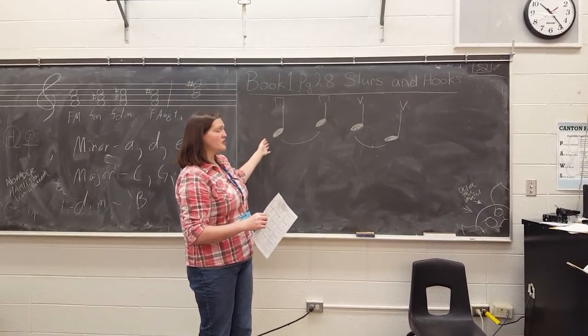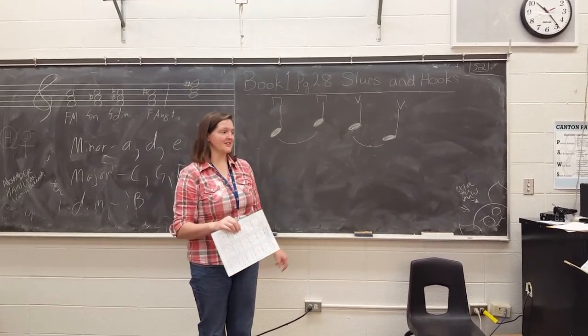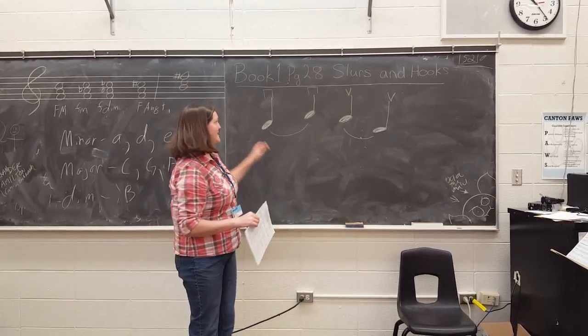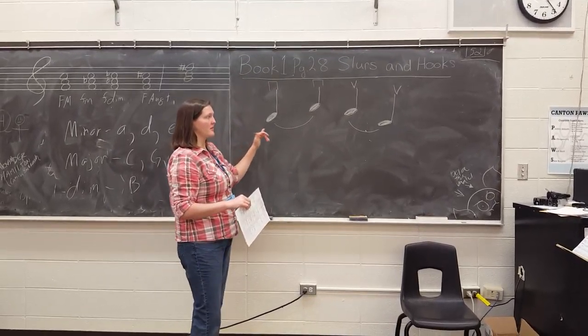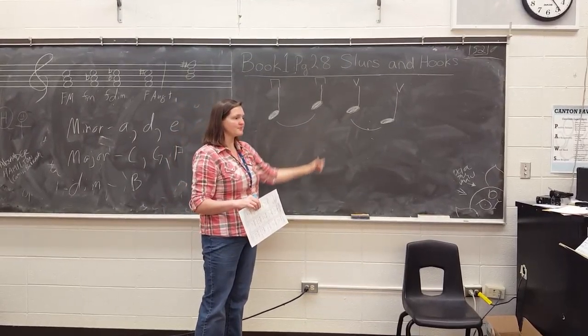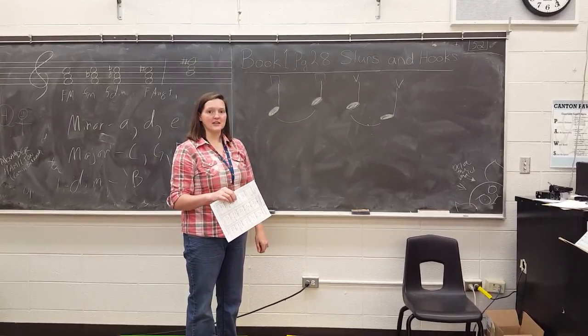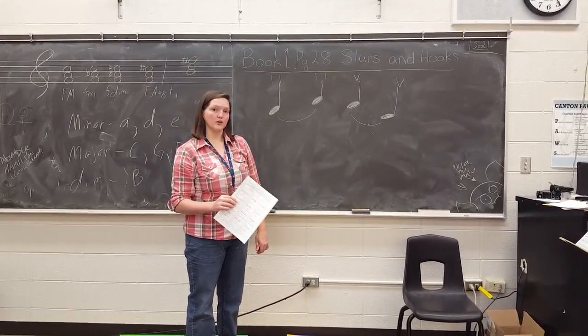So how to play slurs first. The book defines it as a curved line placed above or below the note, as you can see here, that connects the notes with the same bow direction.